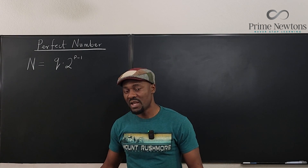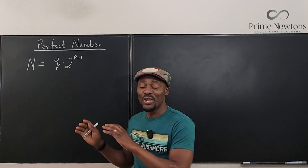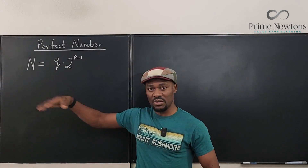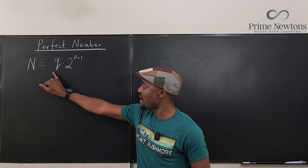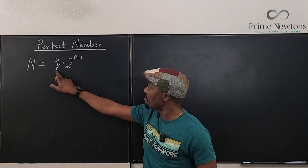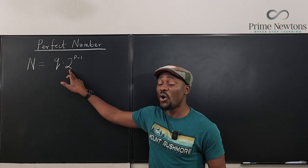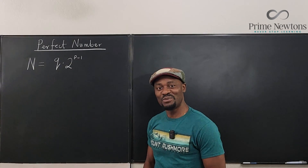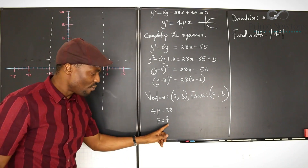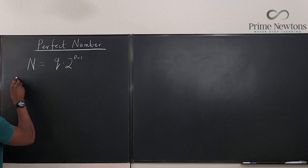q is generally called a Mersenne prime. I don't want the meaning or relevance of Mersenne primes to take away from perfect numbers, so I'm not going to go in depth into it — I'll talk about it in another video. For now, let's say we already have our q and we want to show that the number n is obtained by multiplying q by 2 raised to the power p minus 1, and it will always be a perfect number. Let's do the proof.